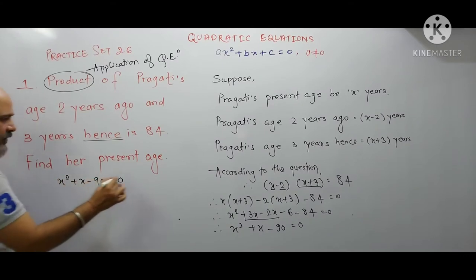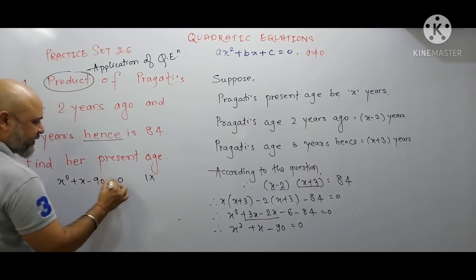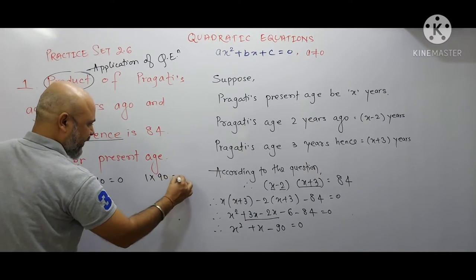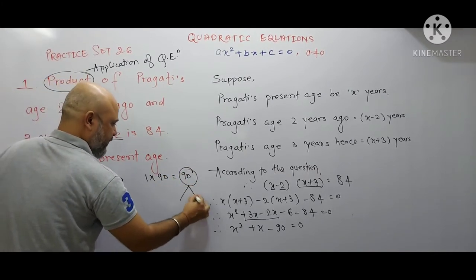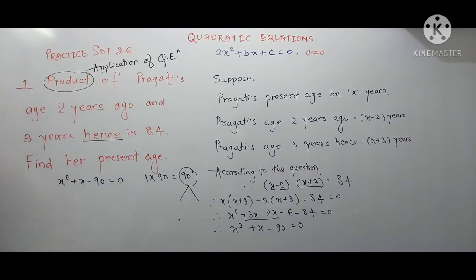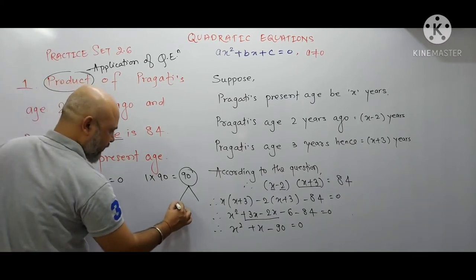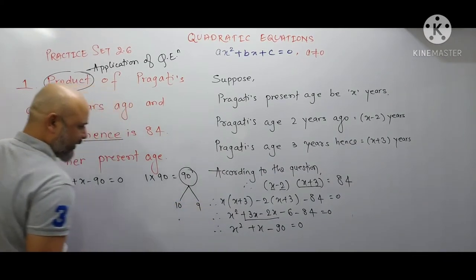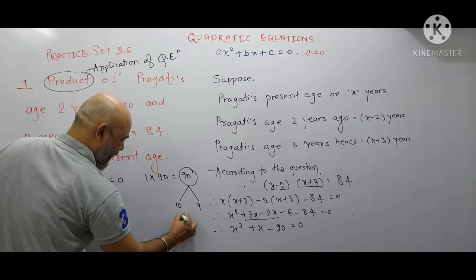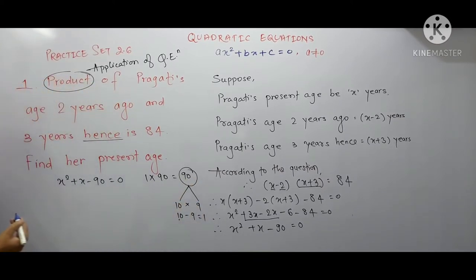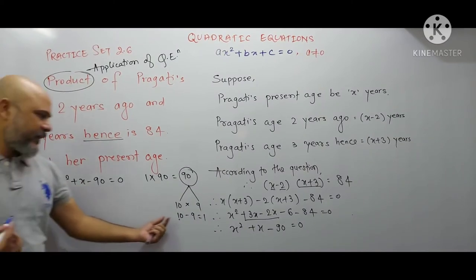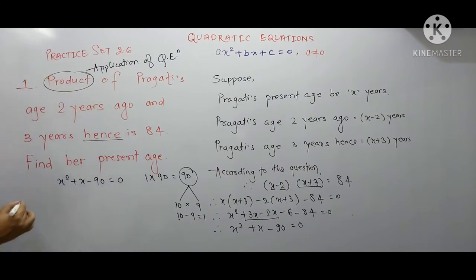Now we will find the factors. In x² + x − 90 = 0, the coefficient of x² is 1 and the constant is 90. We need two numbers whose multiplication is 90 and subtraction is 1. That is 10 and 9: 10 × 9 = 90 and 10 − 9 = 1.